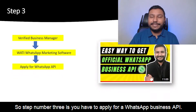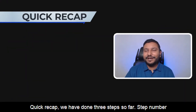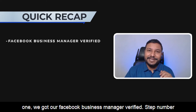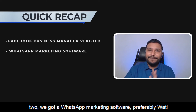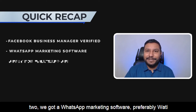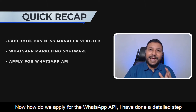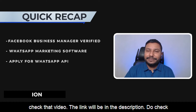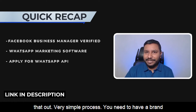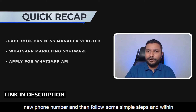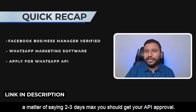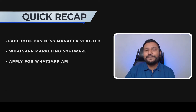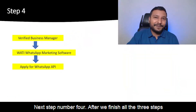Step number three is to apply for the WhatsApp Business API. Quick recap: step one we got our Facebook Business Manager verified, step two we got a WhatsApp marketing software — preferably Whatty, and step three we apply for the WhatsApp API. I have done a detailed step-by-step video on my YouTube channel — the link will be in the description. You need a brand new phone number, follow some simple steps, and within two to three days your API should be approved.